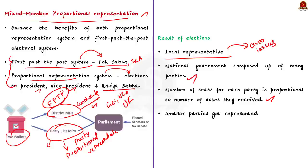As a result, in a mixed member proportional representation system, the national government is composed of many parties and the number of seats for each party is proportional to the number of votes they received. Even smaller parties get a chance to be represented in the national legislature and the government reflects a variety of opinions. This system is more complicated than a simple majority vote, but it ensures everyone's voice is heard.